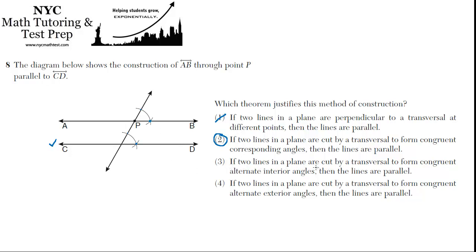Why don't the others work? If two lines in a plane are cut by a transversal to form congruent alternate interior angles, that's the key words there, alternate interior angles. That would be like if this was the first one, then maybe this would be the second one. These two would be alternate interior angles to each other. So it's not that, and it's not exterior angles either. So two is the best choice.